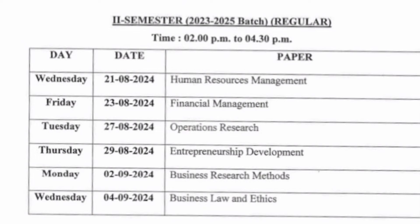On 27th you have Operations Research, 29th Entrepreneurship Development, 2nd September Business Research, and 4th September Business Laws and Ethics. Total six subjects — each subject carries 60 marks as an external paper.